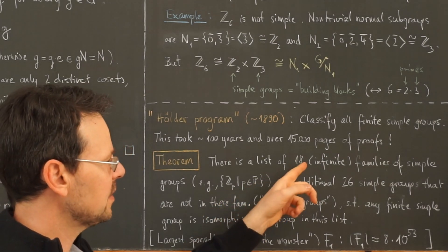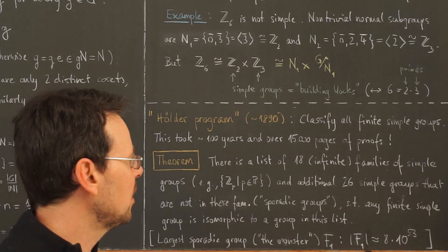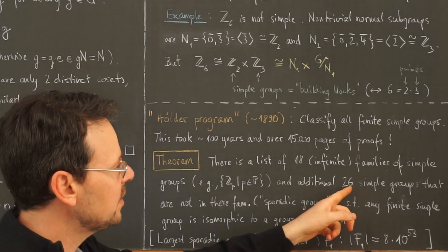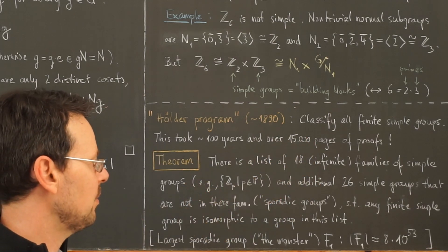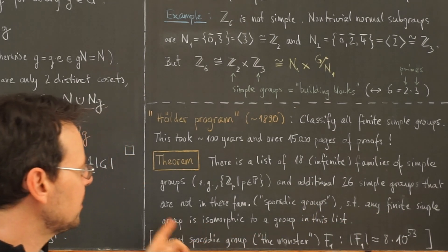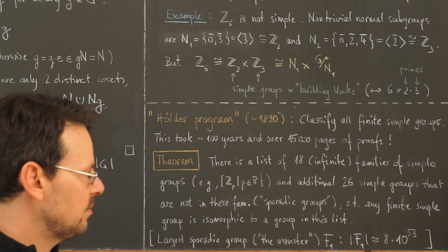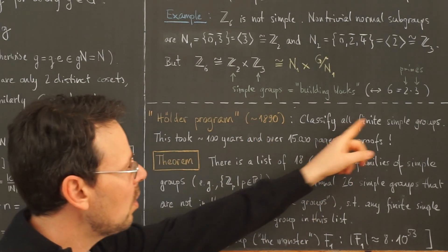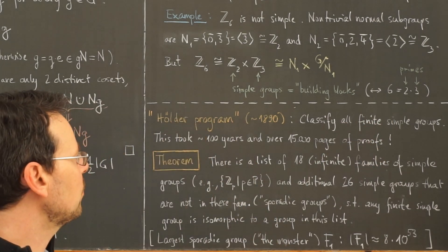And the other 16 families are groups of the so-called Lie type, which are not easy to explain. And there are also 26 simple groups that are not in these families here called the sporadic groups, such that any finite simple group is isomorphic to a group in this list. So this here completely classifies all the finite simple groups, which was the wish of Otto Hölder.